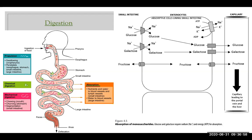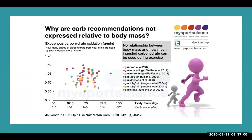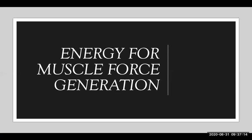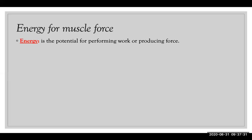After absorption, glucose can be stored as liver glycogen or muscle glycogen. The assimilation phase is where it gets distributed and used for ATP generation and muscle force. Energy is essentially the potential to perform work or produce force. No matter the activity — walking, running, lifting — you need to create energy to perform that work.